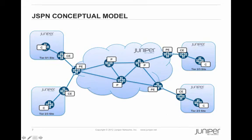Juniper's new WAN architecture uses the same model as the service provider MPLS model, except we control all of the devices — the P devices, the PE devices, the CE and C devices. We control everything. This means that we're running our own MPLS network internal to Juniper, and because of that, we have greater control over our WAN.